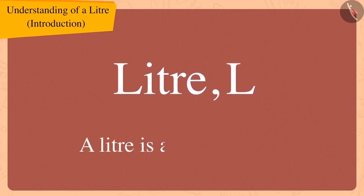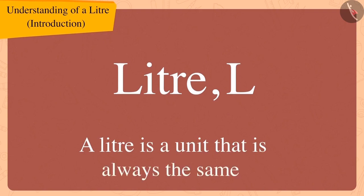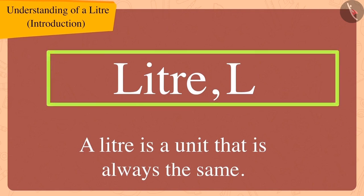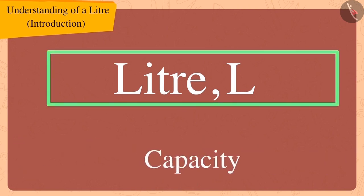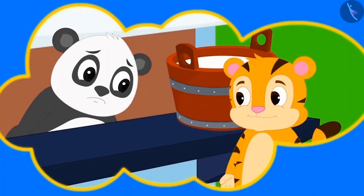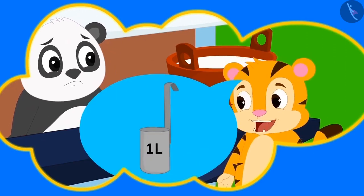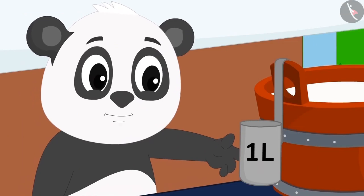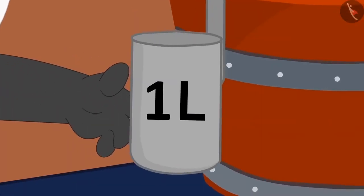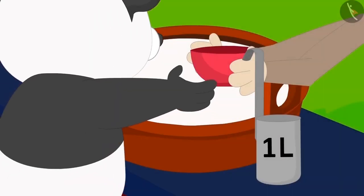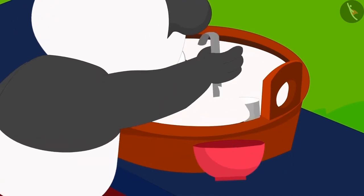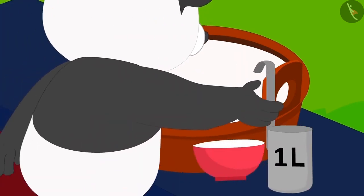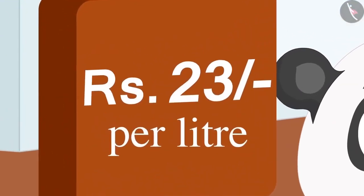A litre is a unit that is always the same, so we can measure the capacity of utensils with the help of litre. We represent it with the sign L. When Sherekh Khan explained this to Golu, he immediately brought a litre measuring scale from the market. Now Golu started selling milk using this measuring scale and took money from everybody according to the amount of milk per litre.